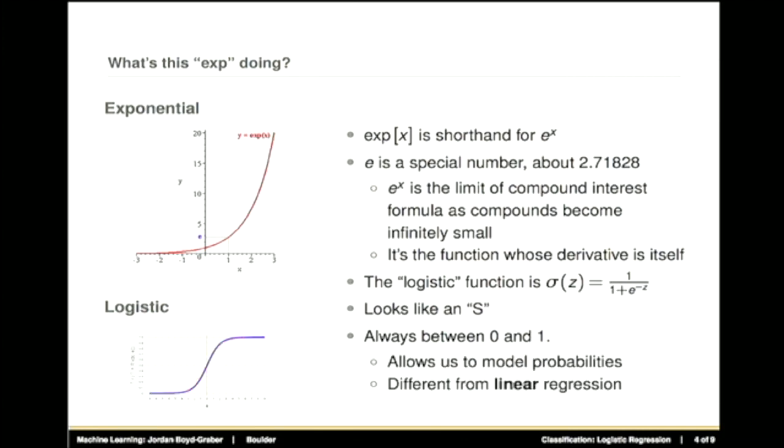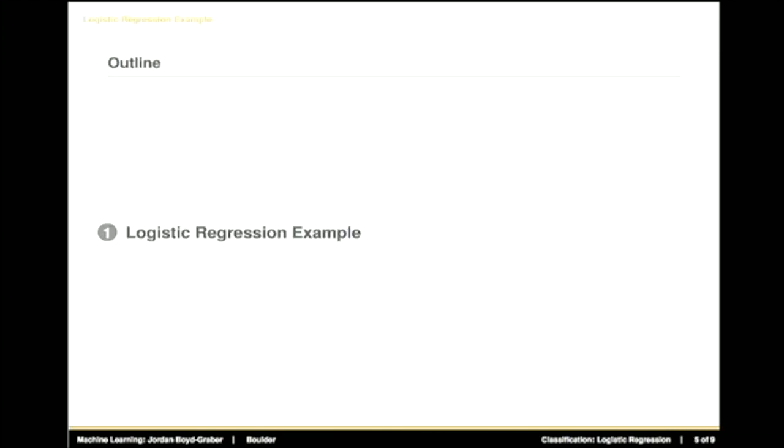So in that case, then why do we care that it's a probability at all? Because probabilities are convenient mathematical language for talking about these things. We'll often want to combine, say, a logistic regression with some other probabilistic mechanism. And for them to talk to each other, they need to both speak the language of probability. Just to reiterate, the output is always between 0 and 1. This allows us to model probabilities. And this makes it different from linear regression, which we'll talk about more later. The outputs of logistic regression always lie between 0 and 1, whereas linear regression has inputs going from negative infinity to positive infinity, and outputs in the same range.